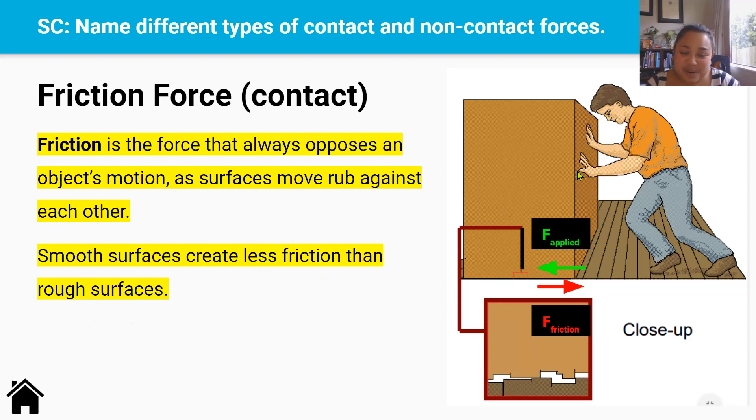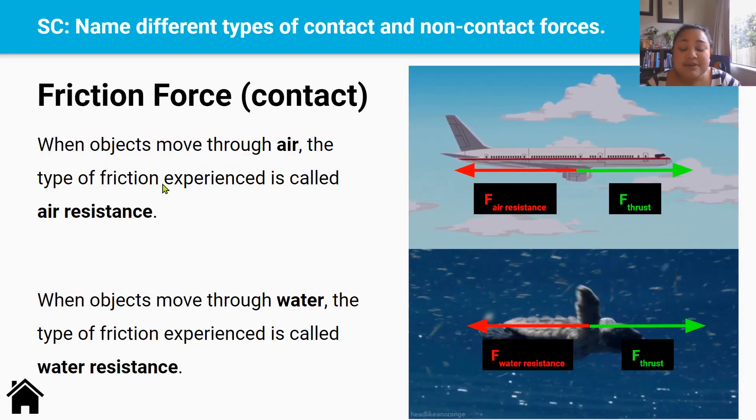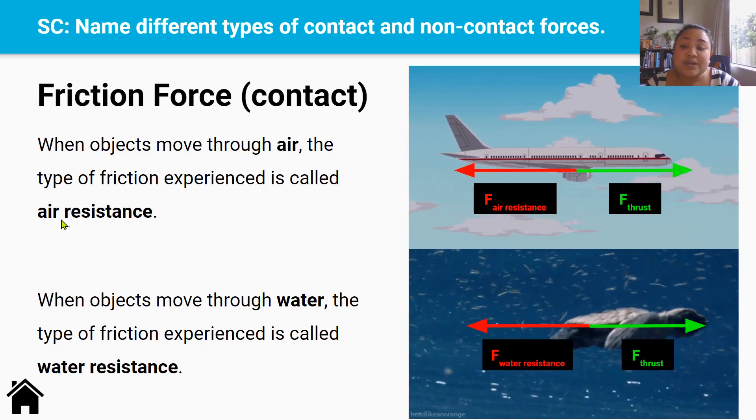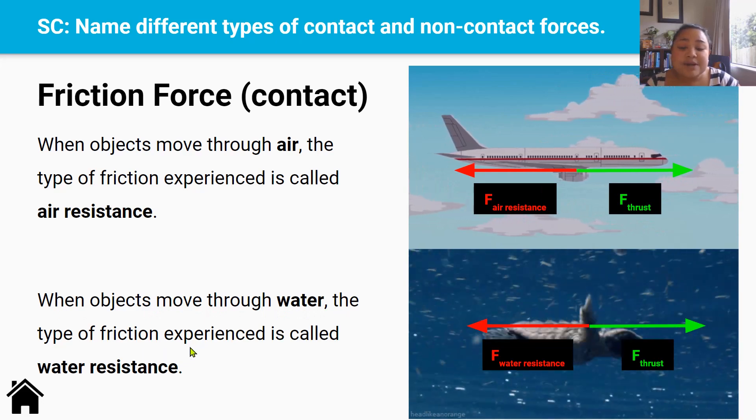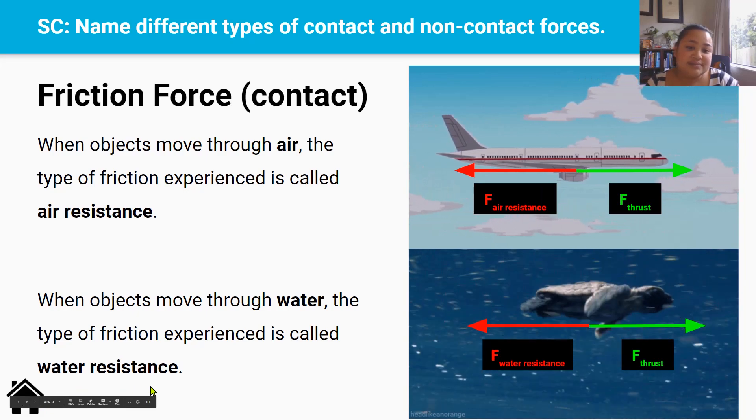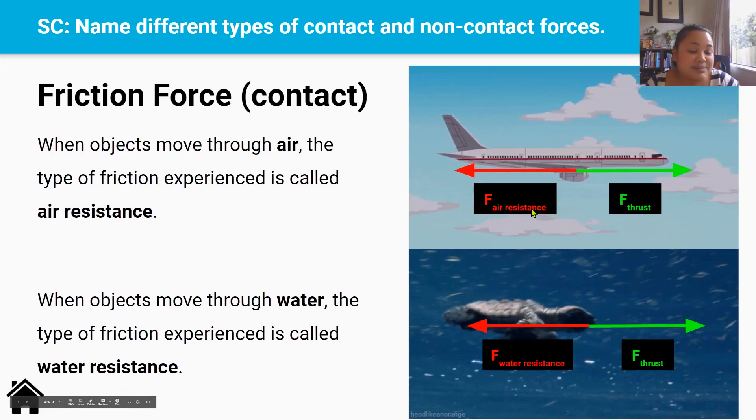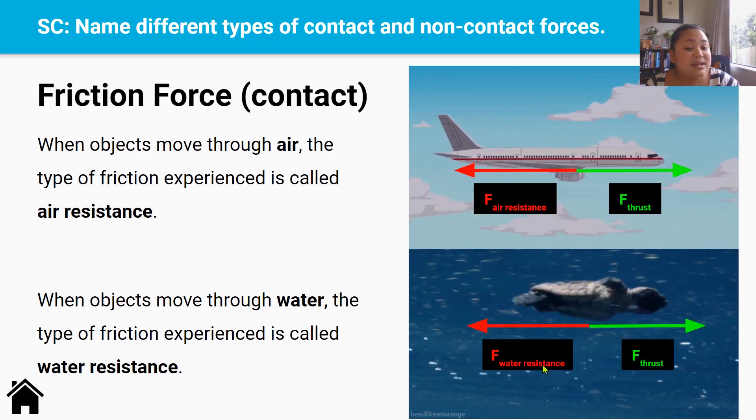So if I push this box on ice, it's going to be easier than pushing this box on concrete. That's because the box itself is rough and the concrete is rough. And so when they rub against each other, they're going to oppose each other's motion. When objects move through air, the type of friction that that object experiences is called air resistance. But when objects move through water, the type of friction experienced by that object, or in this case a turtle, is called water resistance. So planes experience air resistance because they're in air, and this turtle experiences water resistance because they're moving in water.